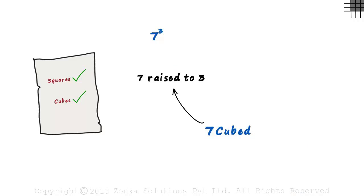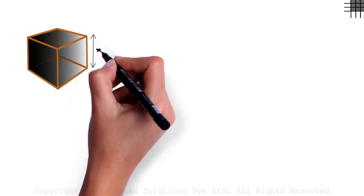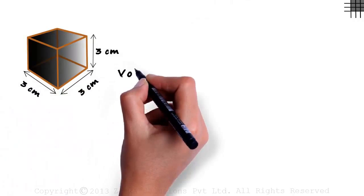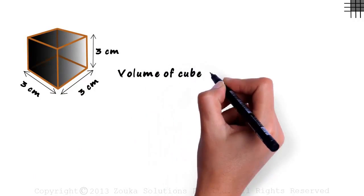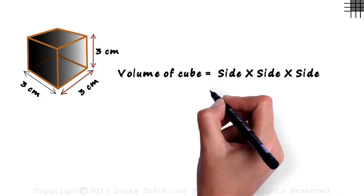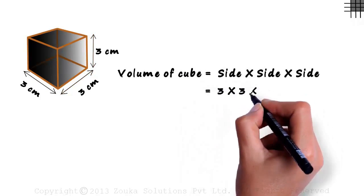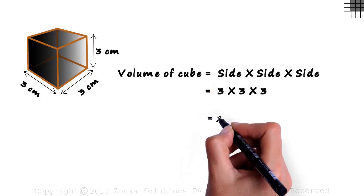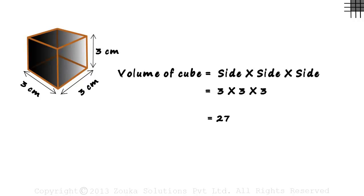Here is one of the practical examples. Assume we have a box in the shape of a cube, and assume the length of all its edges equals 3 cm. The volume of a cube is given by side multiplied by side multiplied by side. So that will equal 3 multiplied by 3 multiplied by 3, which is actually 3 cubed, giving us 27.